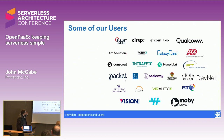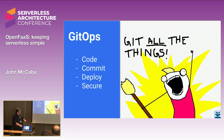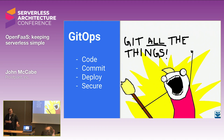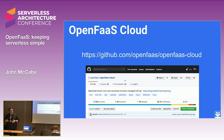We have quite a few users - the list is out of date but growing. One of the things we're also seeing is that a command line isn't enough - developers work in Git, on pull requests and branches. You want to meet them there so the platform and tooling disappear into the background. So we have our own GitOps platform called OpenFaaS Cloud.